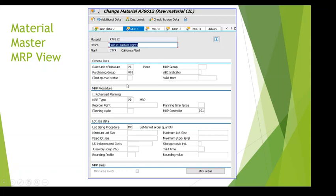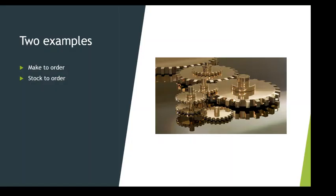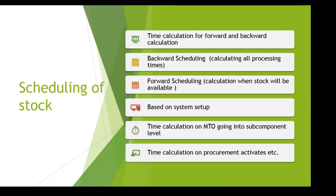These settings affect sales order procurement at the component level. For example, for a raw material we can see where it's going to be purchased from. There are two key scenarios: make-to-order and stock-to-order. In make-to-order, sub-components like wheels, handles, and brakes are ordered and assembled in production. In stock-to-order, a finished good is already available and MRP is calculated based on that. Different companies may have different scenarios.